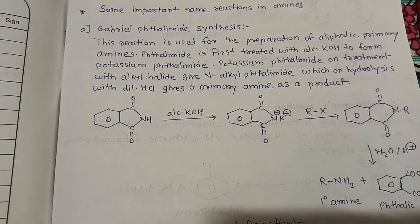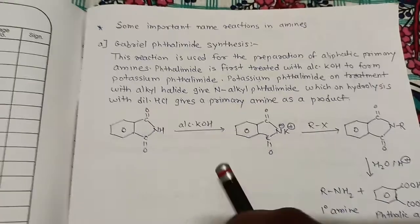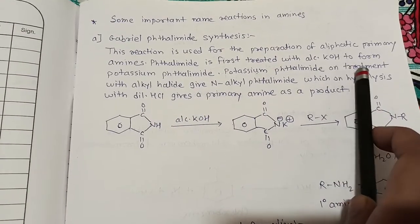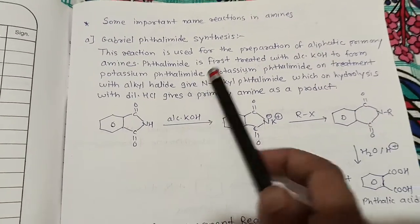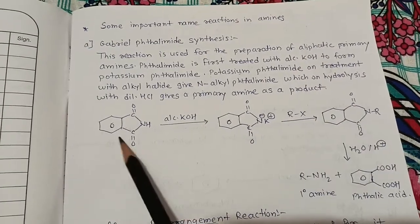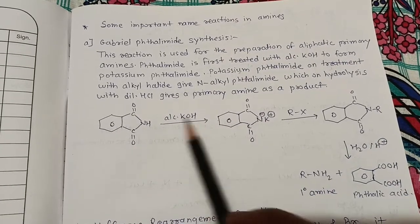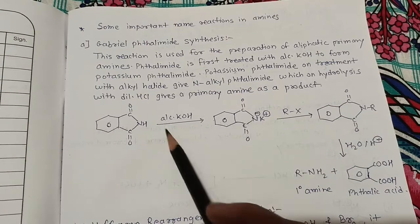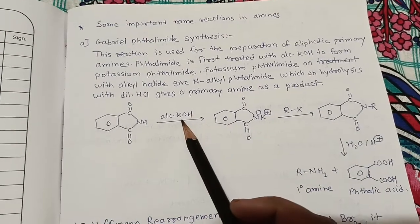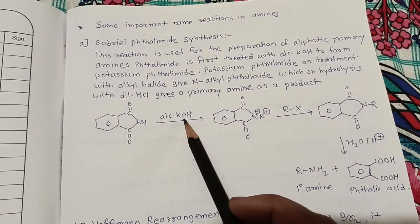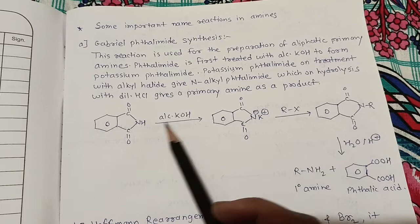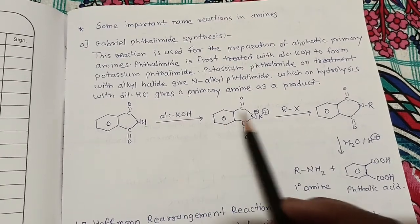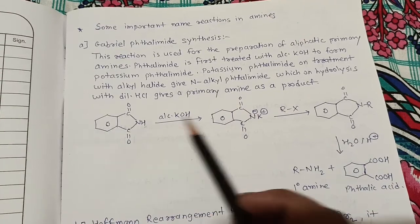Phthalimide is first treated with alcoholic KOH, which is a base, to form potassium phthalimide. See the first step of the reaction — this is phthalimide treated with base KOH (alcoholic KOH). The role of base is to accept a proton, so it accepts the proton, water goes out, and K comes in place of H.